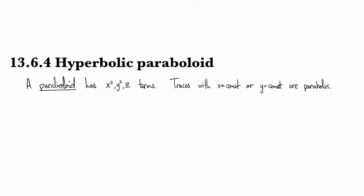Now we look at hyperbolic paraboloids. So this is again a paraboloid, meaning that again it's going to have two squared and one linear terms.